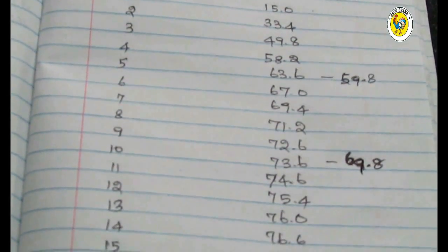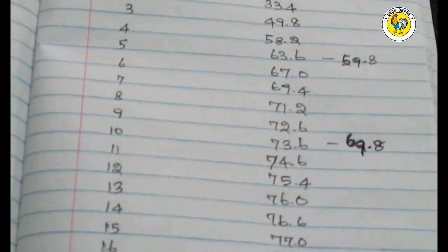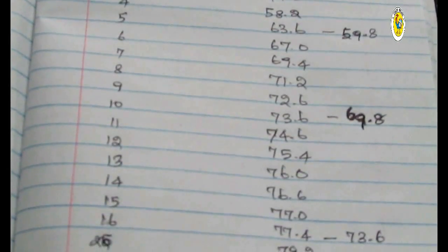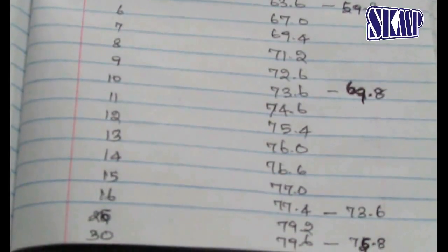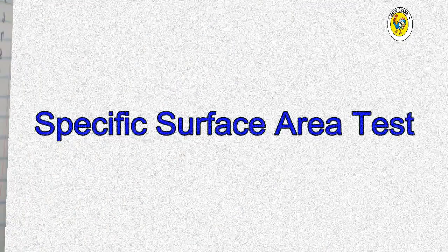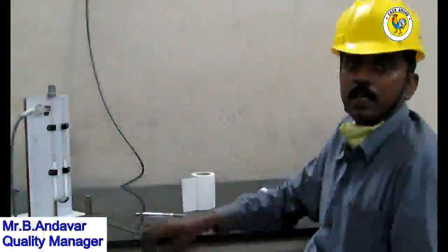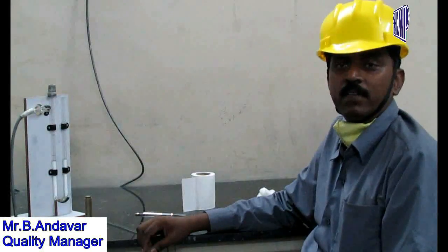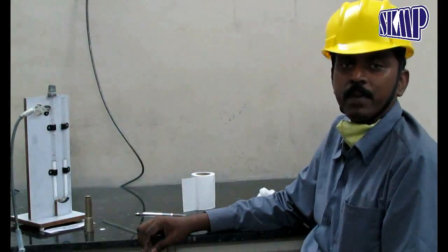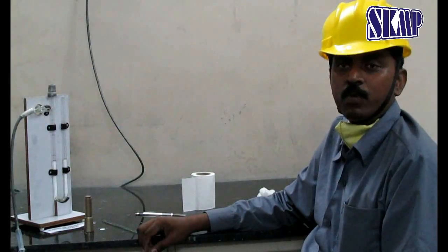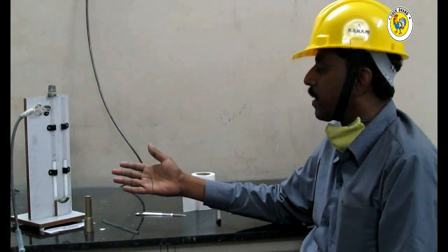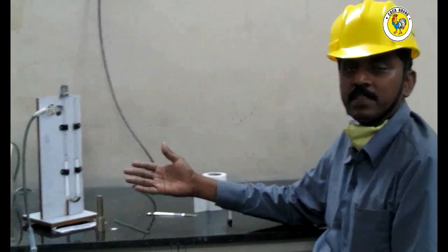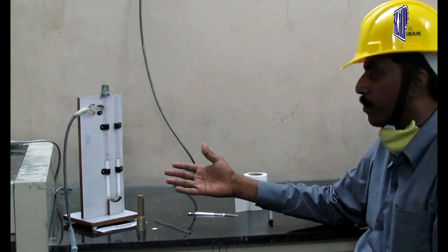We achieved the requirement. This is an air permeability apparatus used to check the specific surface area of aluminium powder.